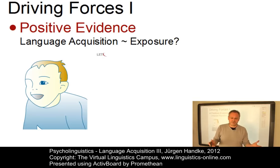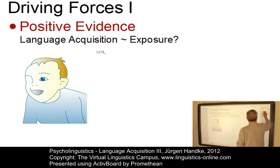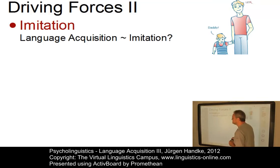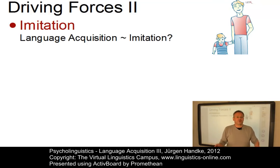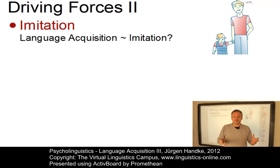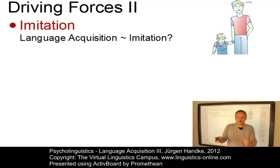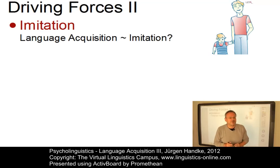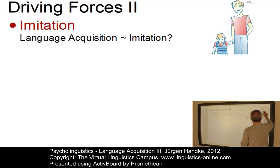Could it perhaps be that language acquisition is some sort of imitation of adult language? This would be a very simple explanation of how children learn their language — children just reproduce what they hear. While imitation plays an important role in learning how to pronounce speech sounds and words, this is not true of the larger part of language development.